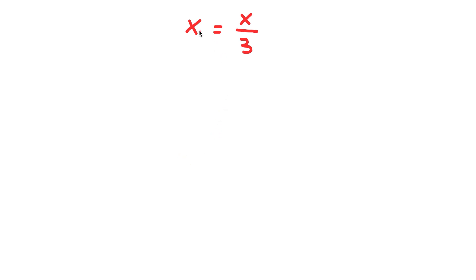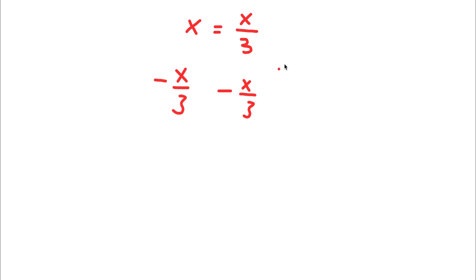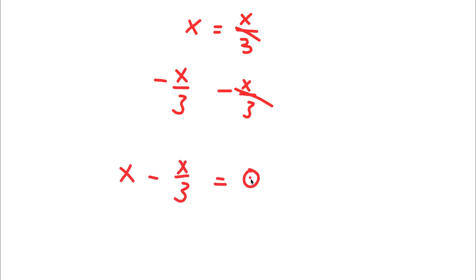All right, so on this problem, I have x is equal to x over 3. To solve this, I'm going to first start by subtracting x over 3 on both sides. These two are going to cancel out, and I'm going to be left with x minus x over 3 is equal to 0.